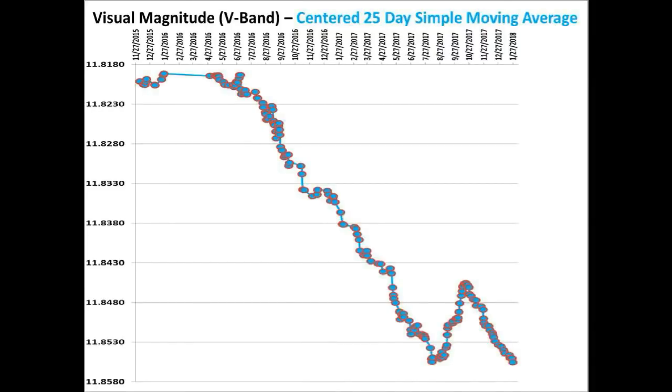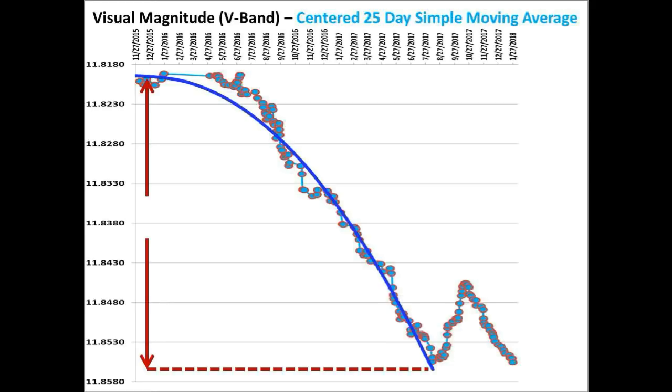So the last time we updated you on January 28th, this was the V-band centered 25-day simple moving average of the long-term light curve of Tabby Star. And as a further reminder, there are three distinct components that make up this light curve. First, there is an accelerating long-term dimming light curve component that is shown here with a best fit curve over the span of time from December 6th of 2015 to October 10th of 2017, where it dimmed by approximately 3.54% to its lowest level of 11.8555.